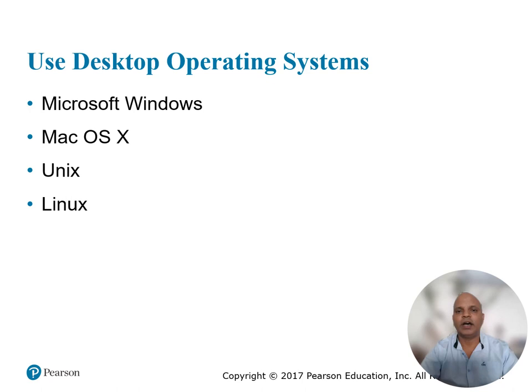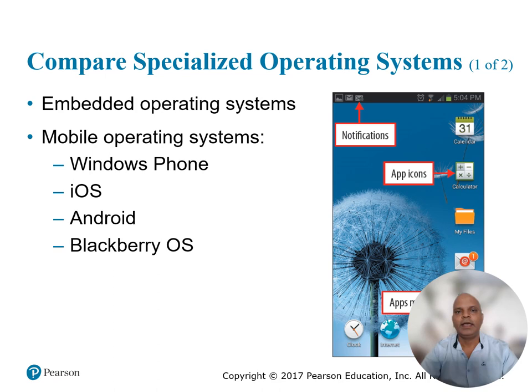The operating system you use depends on the hardware you have. It is important to update the operating system to ensure the best features and security. Devices running embedded operating systems are all around us. You may have a GPS navigation system, a video game console, or use an ATM, all of which feature embedded operating systems. Embedded operating systems are specialized software.